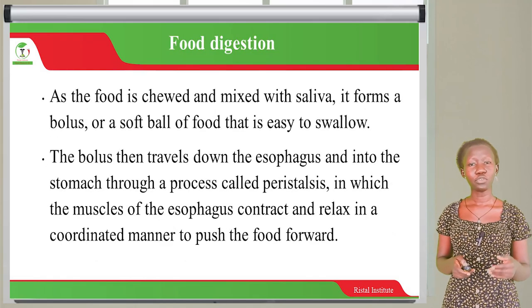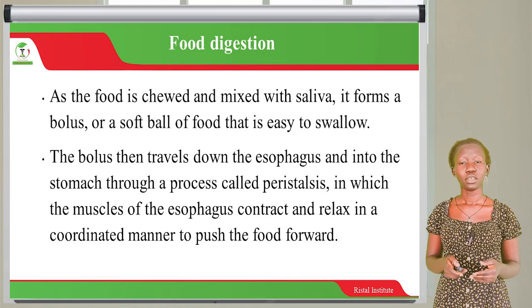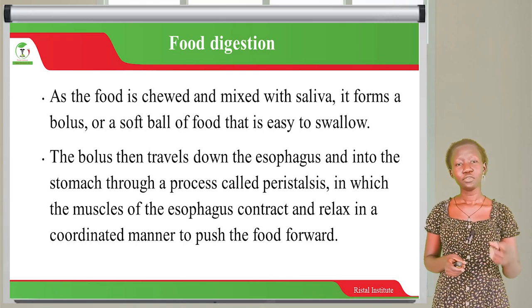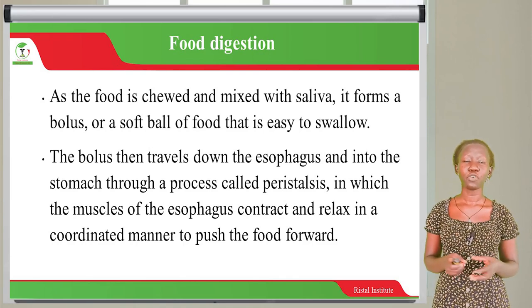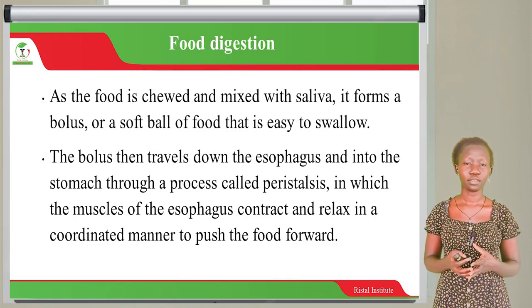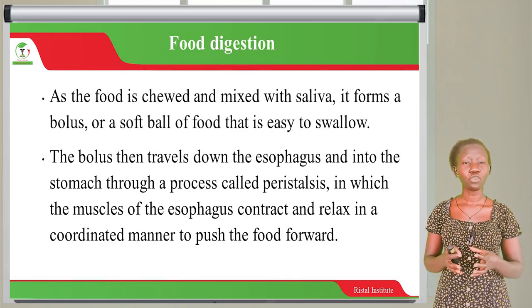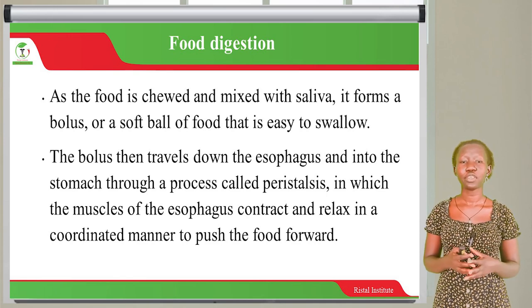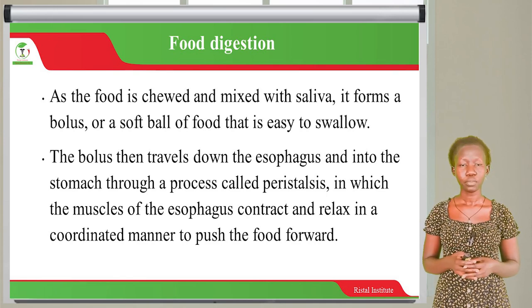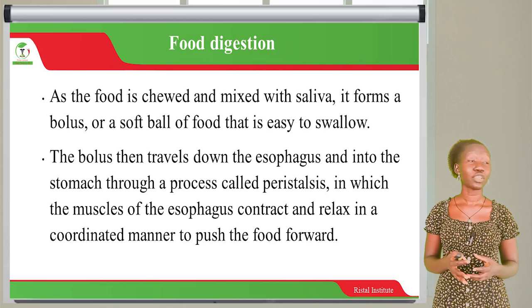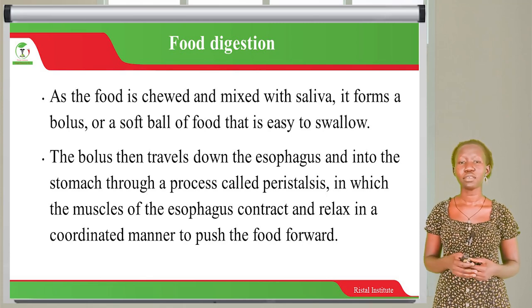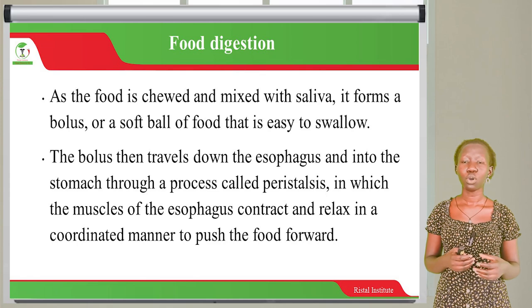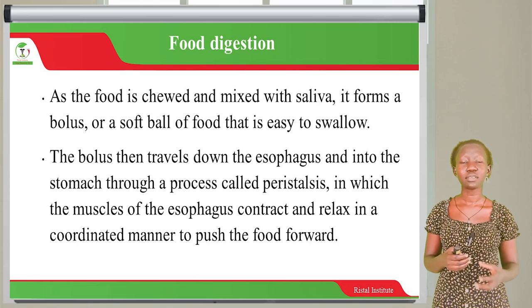As you chew the food and as it is mixed with saliva, it forms a bolus — a soft ball — that makes it easy to swallow. This bolus of food then travels down into the esophagus and into the stomach through a process called peristalsis.